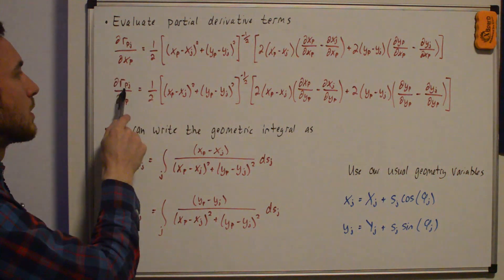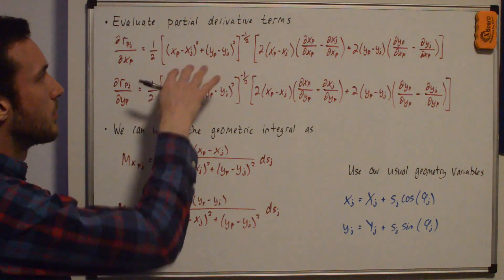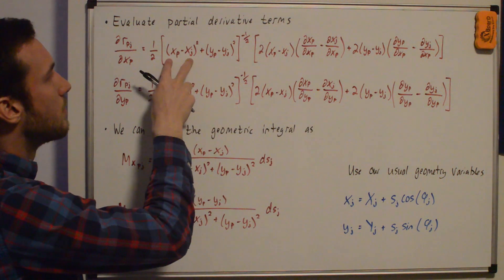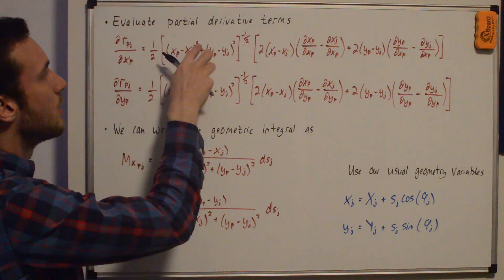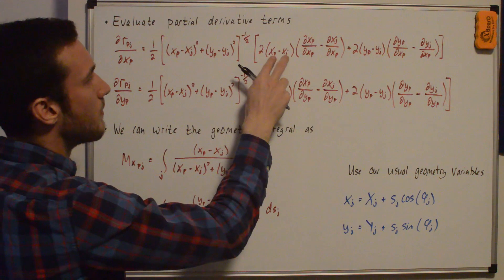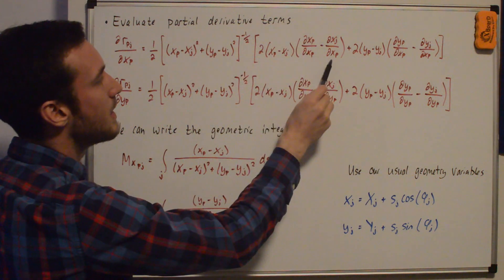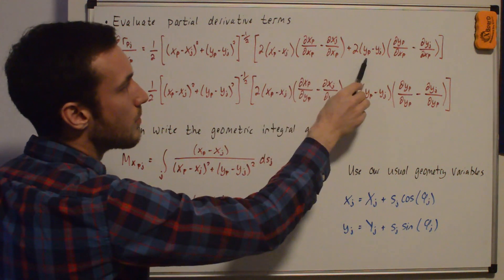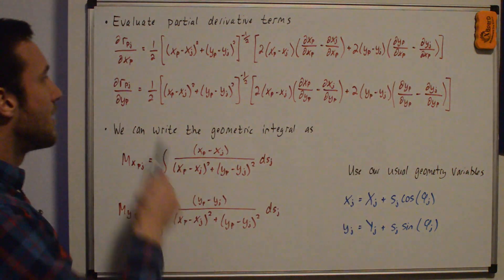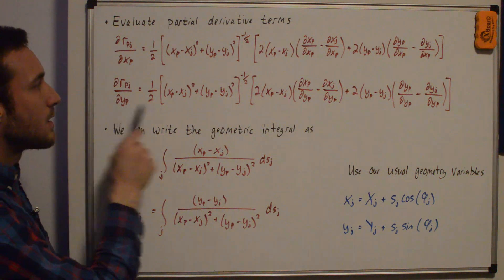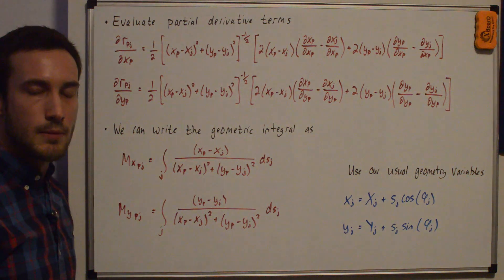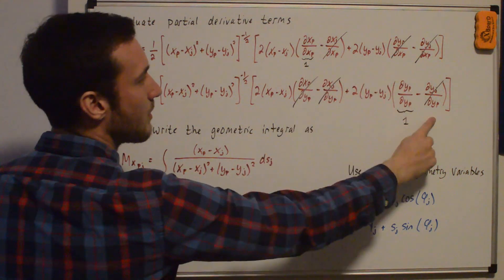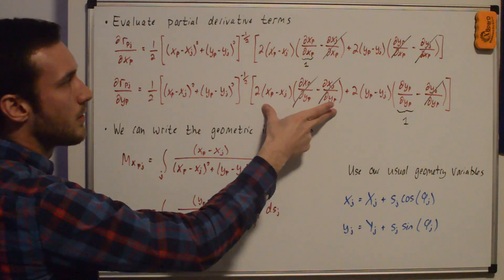We need to solve for DRPJ/DXP and DRPJ/DYP. For DRPJ/DXP we take the one-half power, bring it down, subtract one from the exponent, then apply the chain rule to the inside. This gives two times (XP minus XJ) with DXP/DXP, and two times (YP minus YJ) with DYP/DXP. Similarly for DRPJ/DYP, all partial derivatives are with respect to YP. Terms with different subscripts are zero and cancel out, eliminating several terms entirely. DXP/DXP equals one and DYP/DYP equals one.